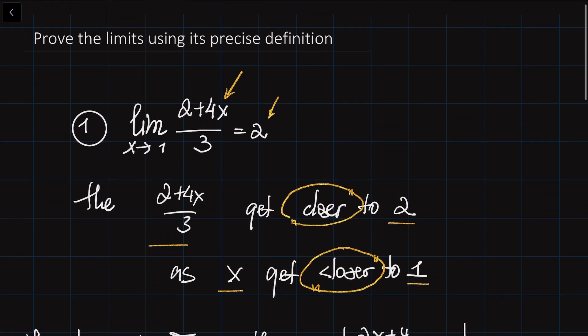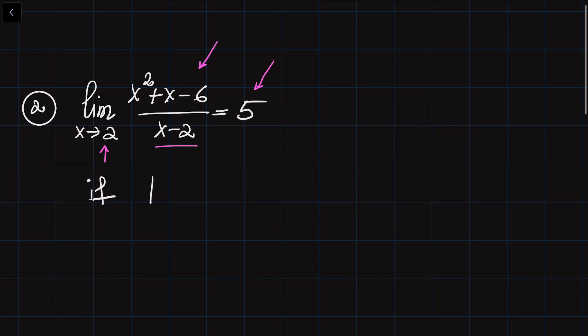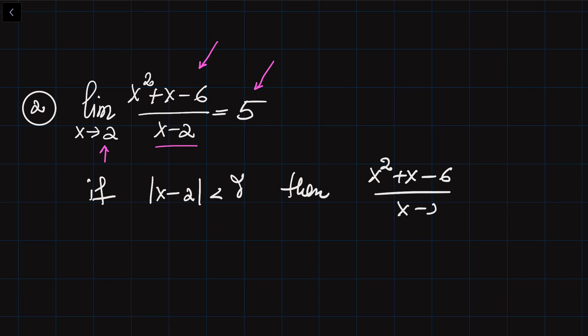I'm going to do a similar thing for the second example. We are given this function and we need to show that its limit is equal to 5. We want to write: if |x-2| is smaller than delta, then |(x²+x-6)/(x-2) - 5| is becoming smaller than epsilon. So what is the delta?